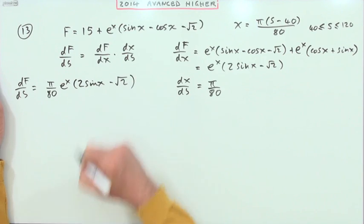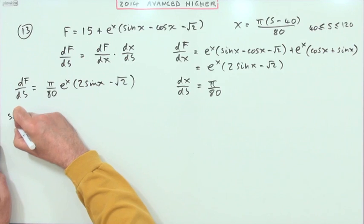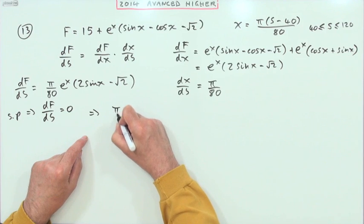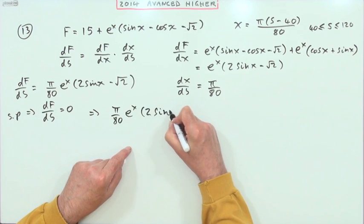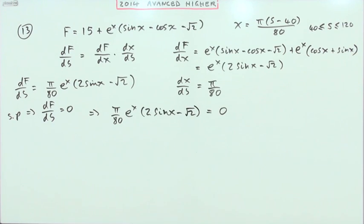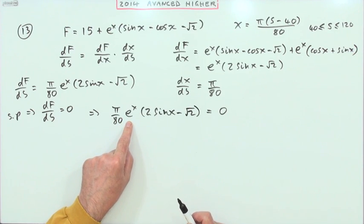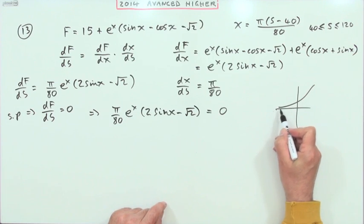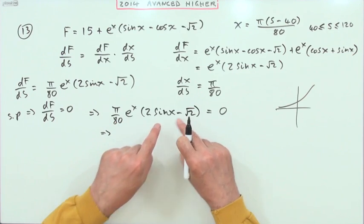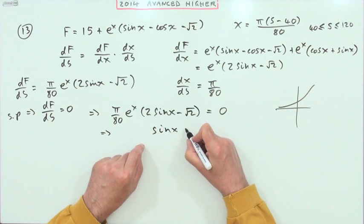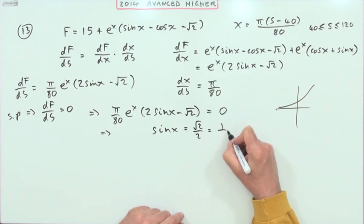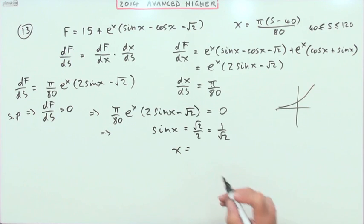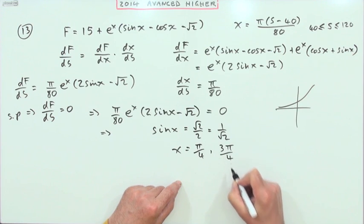For stationary points, df/ds = 0, so (π/80) · e^x · (2 sin x − √2) = 0. There's a factorization: either factor could equal zero. Since e^x can never equal zero (the graph is asymptotic to the x-axis), we need 2 sin x − √2 = 0, so sin x = √2/2 = 1/√2. Therefore x = π/4 or x = 3π/4.